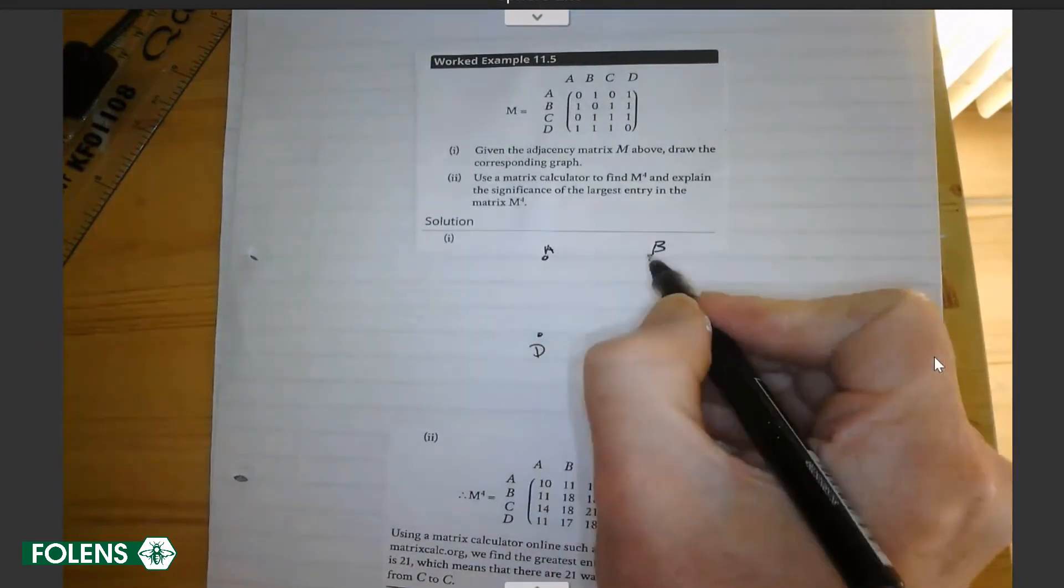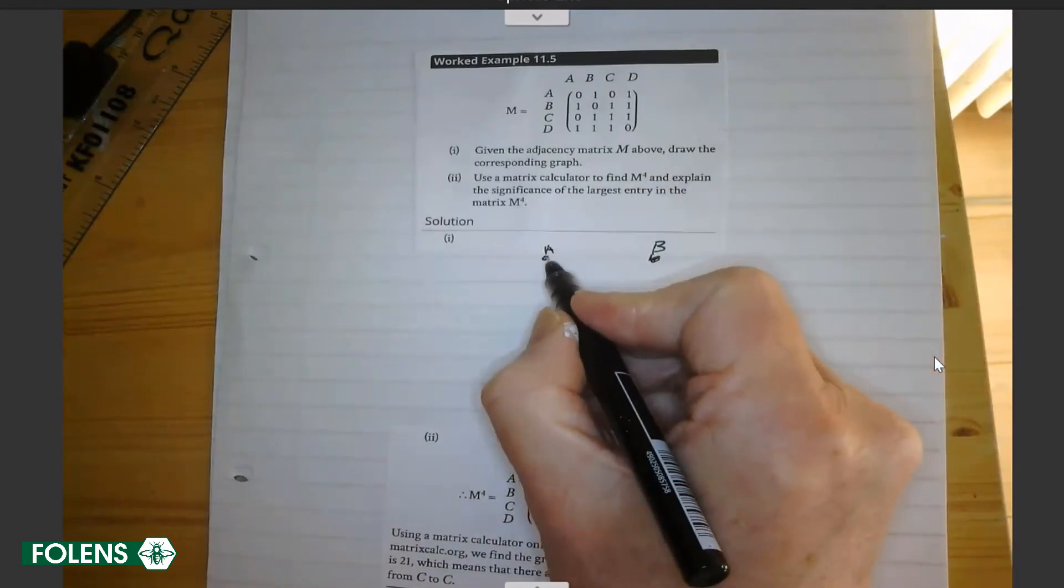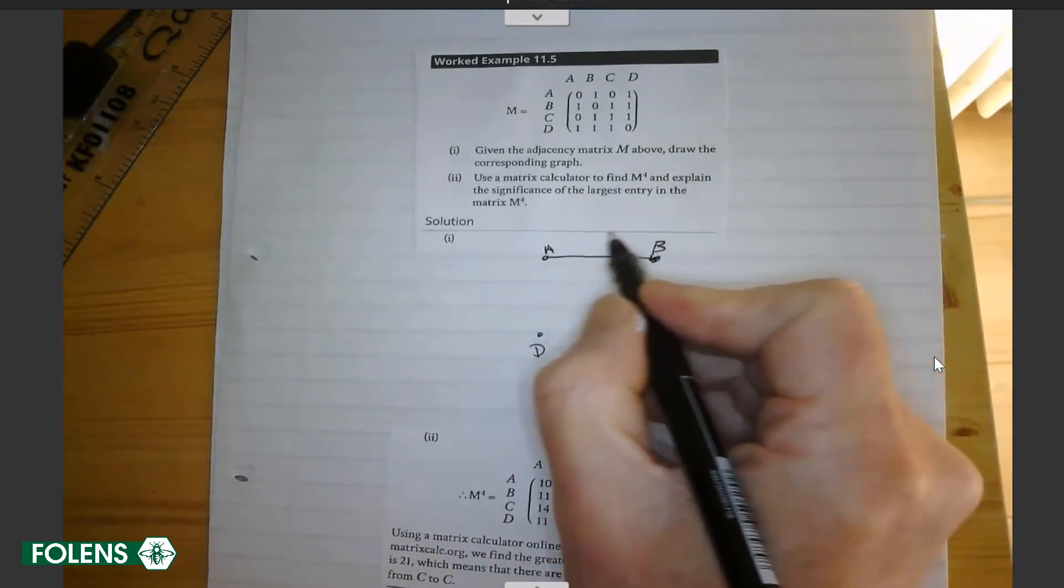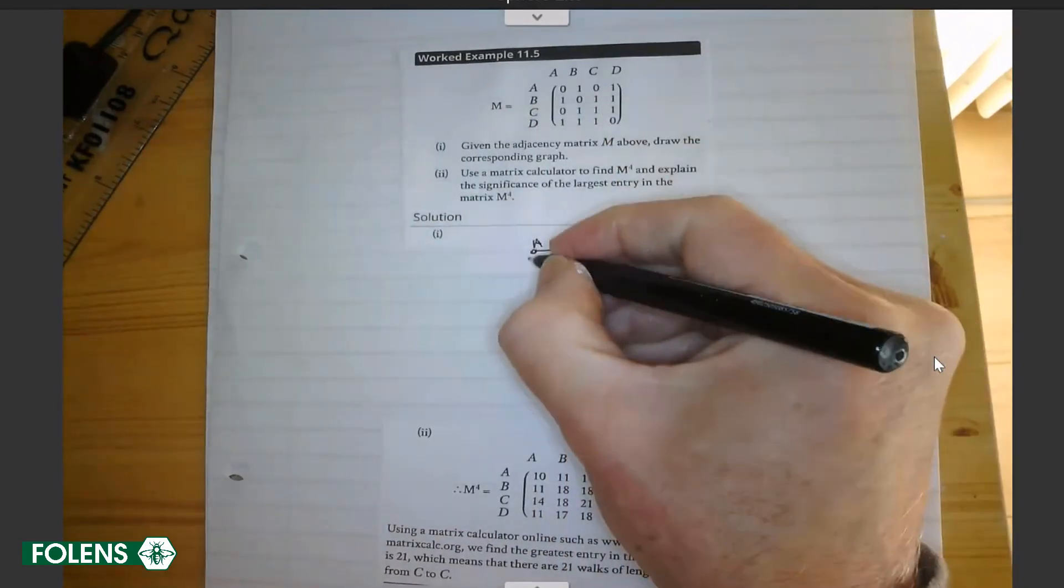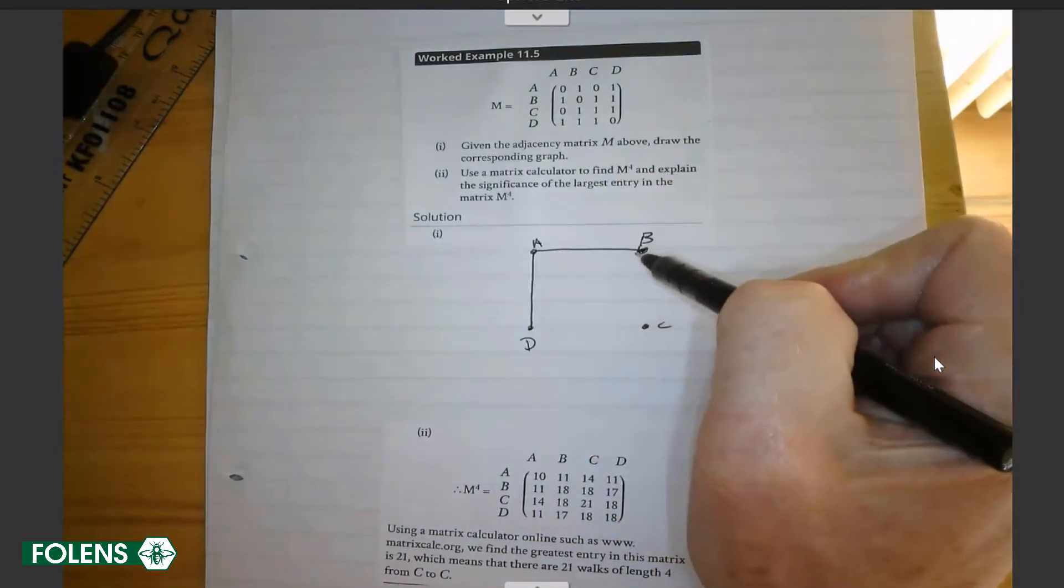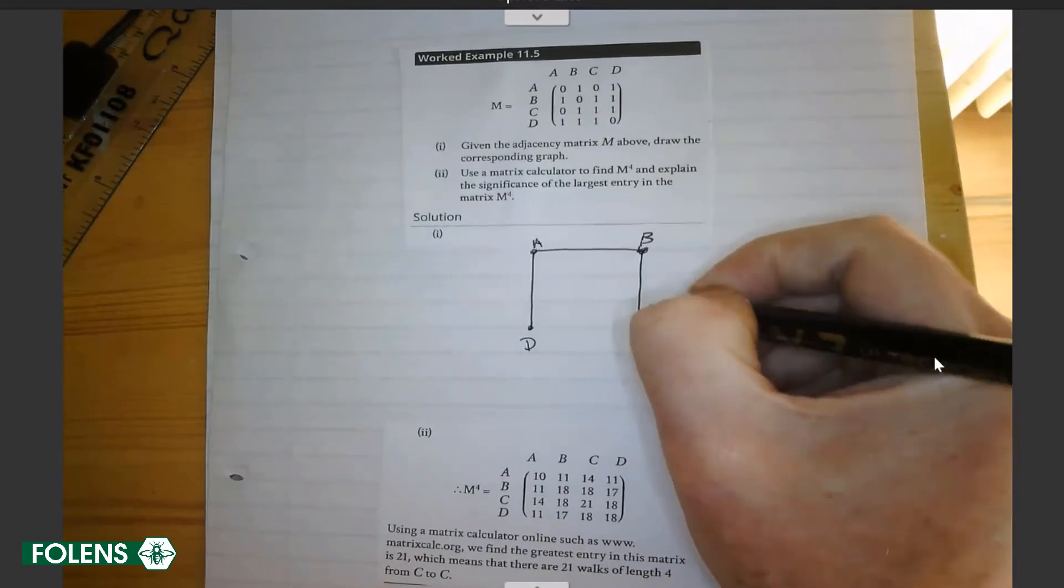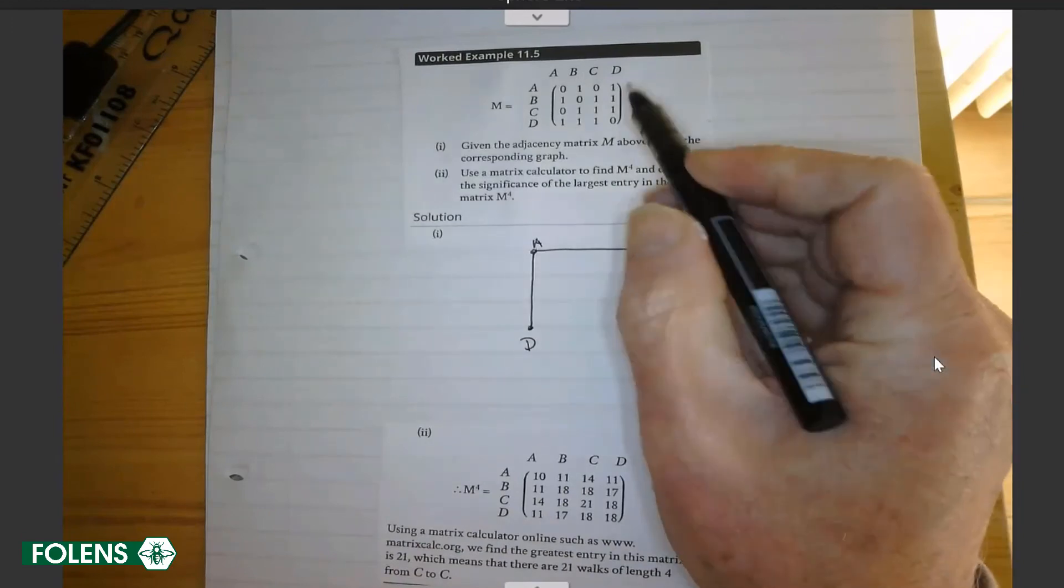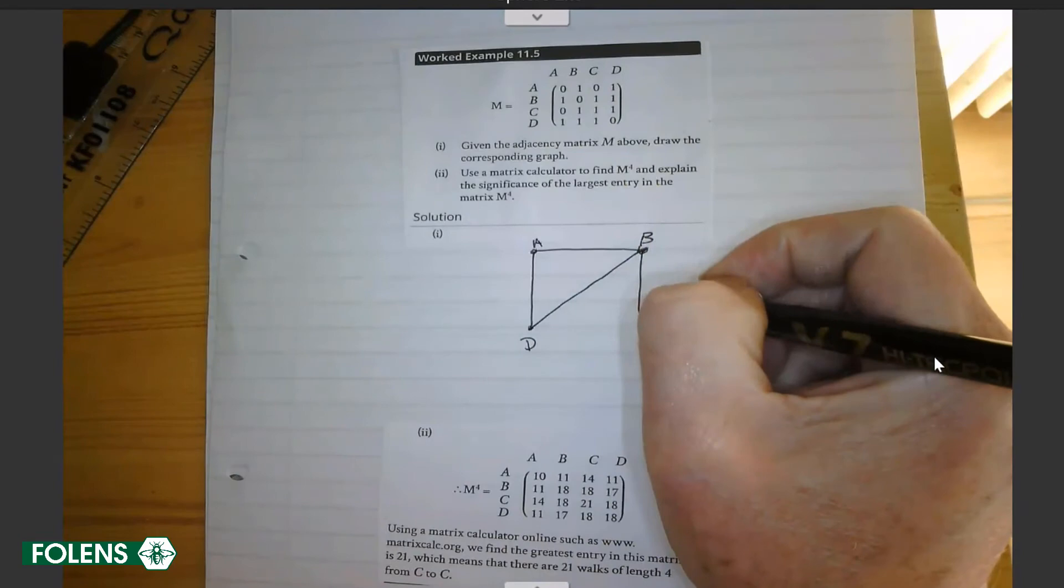Well, we put A and B and C and D in a nice square. A to B, there's no road from A to A, there's no loop. From A to B, there's one road. From A to C, there are none. And from A to D, there has to be one. From B to A, there's one, we've done it already. From B to B, there's none. From B to C, there's one, so we must join B to C. And from B to D, there's one, so B must be linked to D.